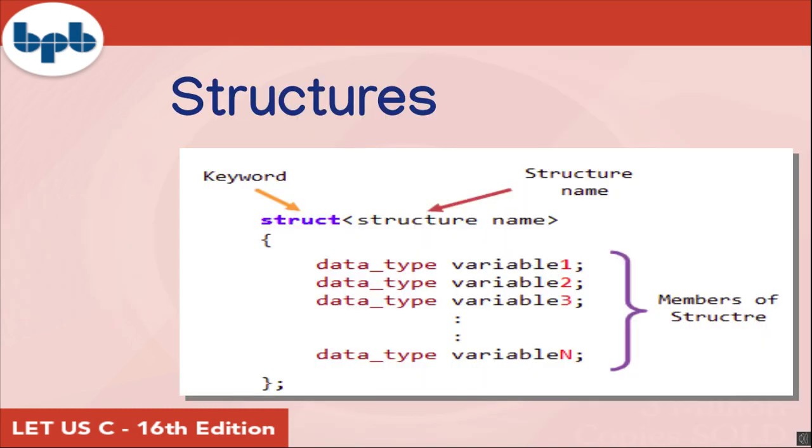A structure is a user defined data type in C. A structure creates a data type that can be used to group items of possibly different types into a single type. A structure basically consists of three parts: structure name, struct keyword and structure member. An array of structure can be used to store an array and perform different operations with it.